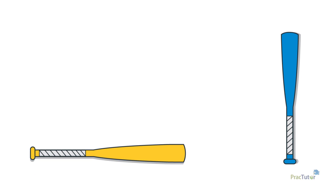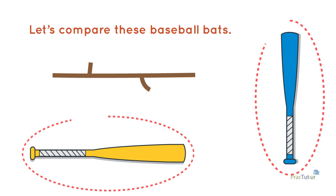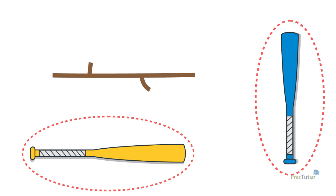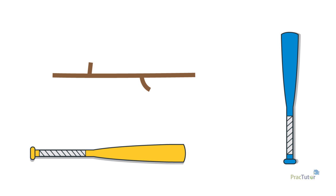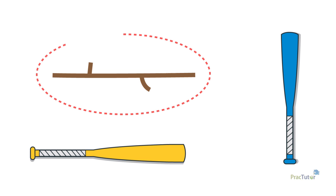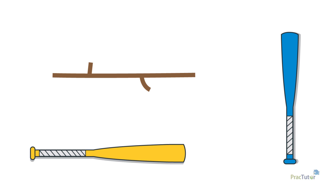Sometimes you may not be able to compare lengths easily. In that case, you can use another object to help you compare lengths. Let's compare these baseball bats. How can we compare them without measuring with a ruler? We can use another object to compare, like this stick. We can compare the length of each bat with the length of the stick to see which is longer.